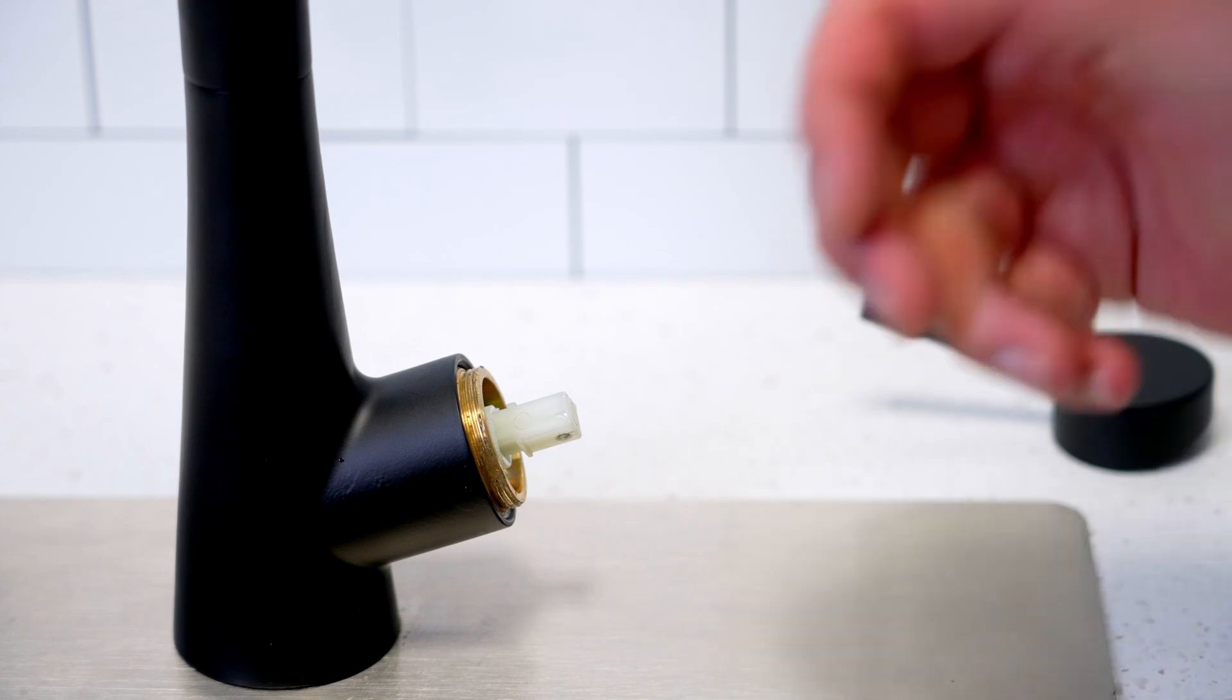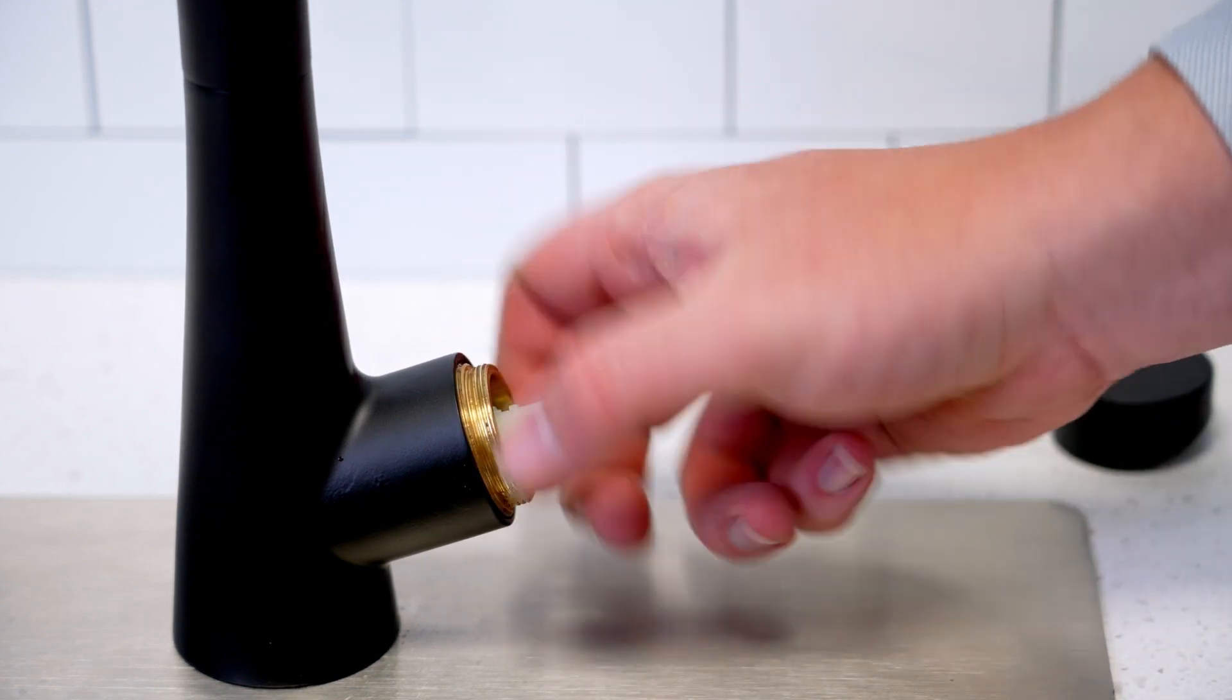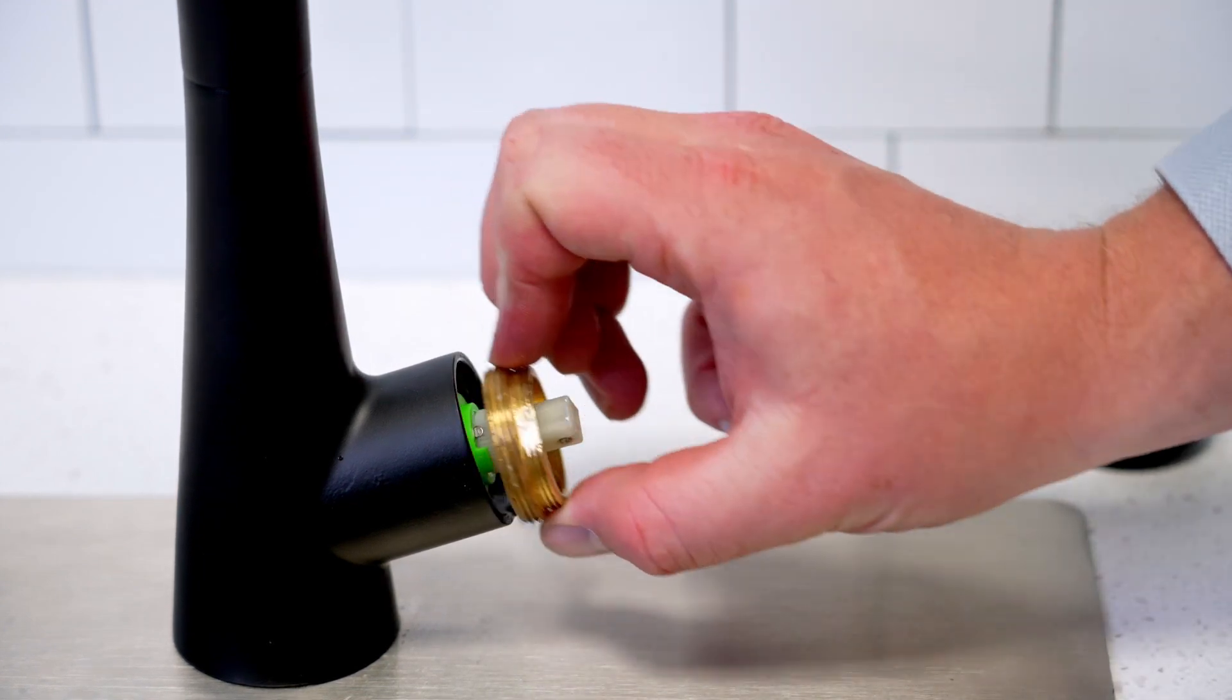Once it's loosened enough, thread it out by hand and take out the faucet cartridge.